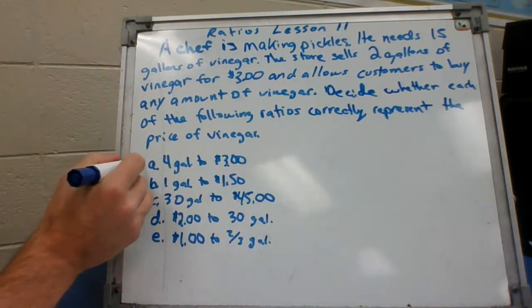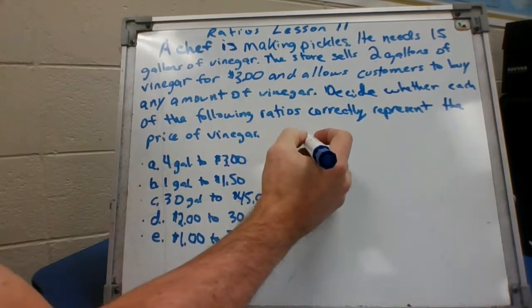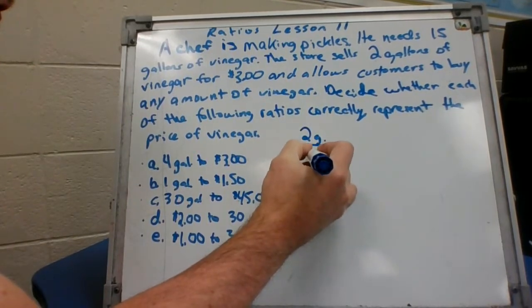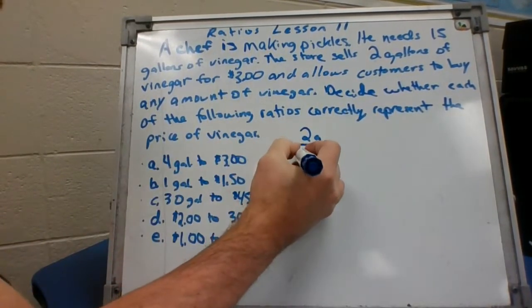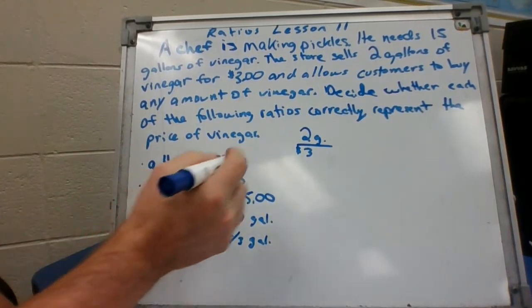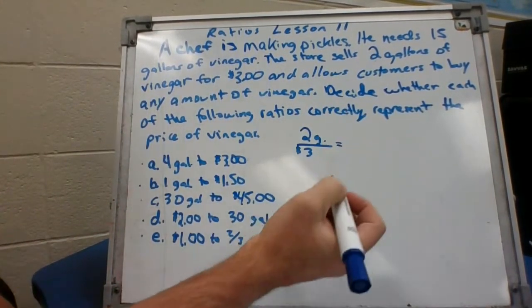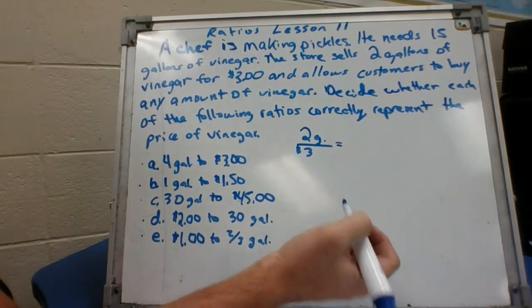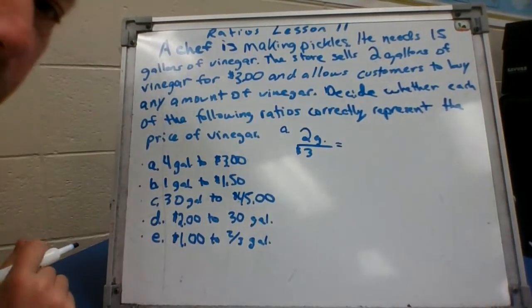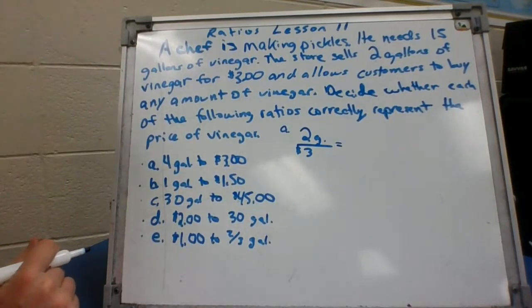Two gallons for three dollars, decide whether each of the following ratios correctly represent the price. So we gotta see if these ratios are equivalent to two gallons over three dollars. We're gonna set up equivalent ratios. This is your A, I'm gonna try to write small to squeeze these in.